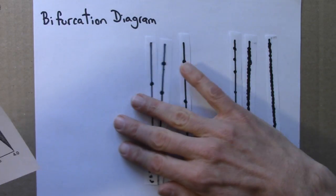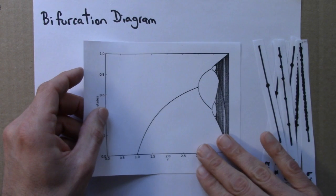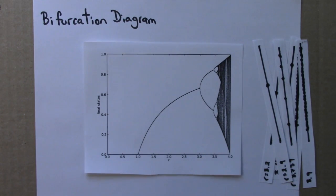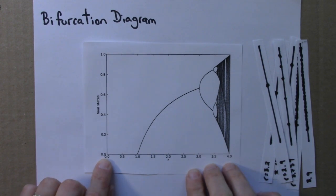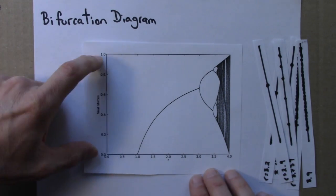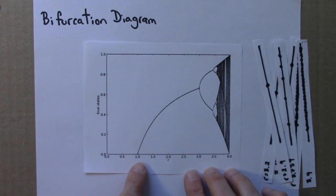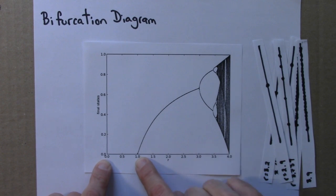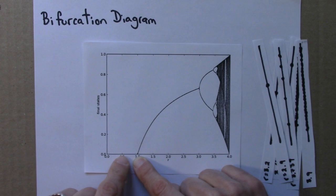Here's the bifurcation diagram for the logistic equation. The lower limit here is R equals 0, and here is R equals 4, and then this goes from 0 to 1. So when R is between 0 and 1, between my fingers here, I can't quite see it here, but the only fixed point is the attracting fixed point at 0. If the growth rate is less than 1, the rabbits die out.